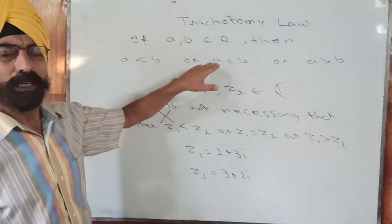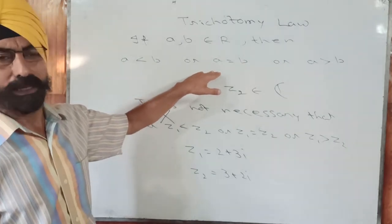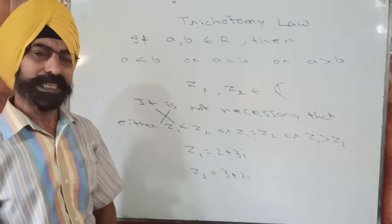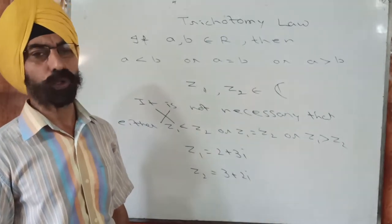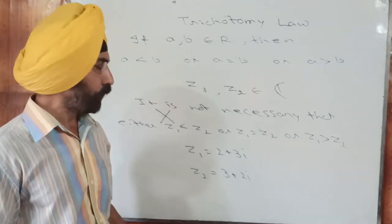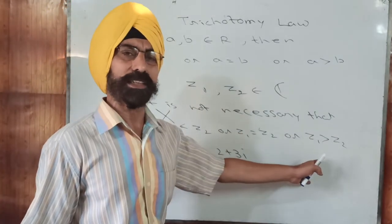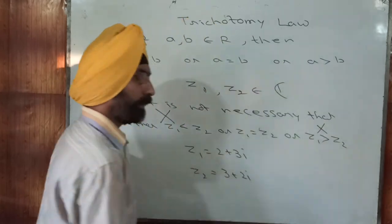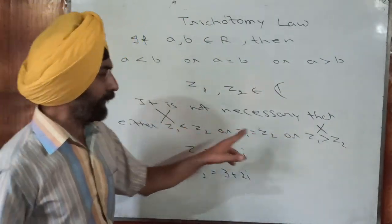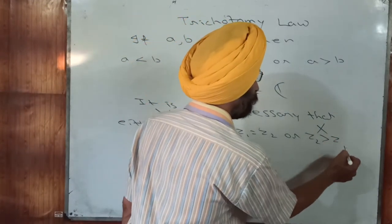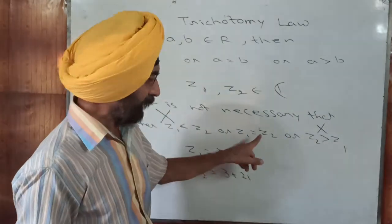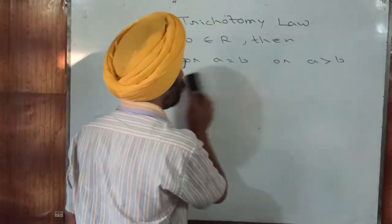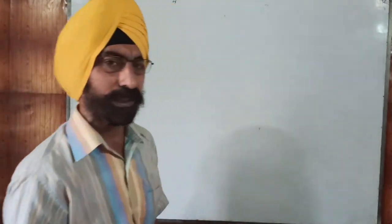This trichotomy law, which seems very simple, is really very important when you enter the field of complex numbers — it fails. That means two complex numbers are usually non-comparable. You can't say Z1 is less than Z2, you can't say Z1 is greater than Z2 — these two conditions will never hold for complex numbers. But equality, Z1 equals Z2, may be possible. When that condition holds, the two complex numbers are called equal.